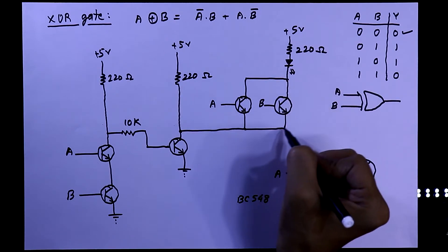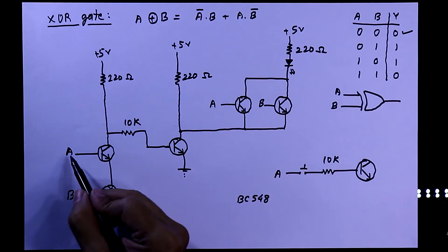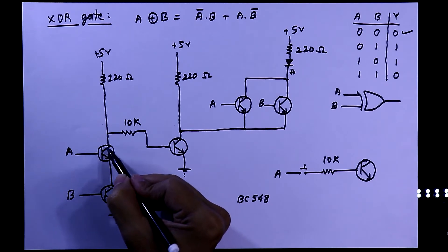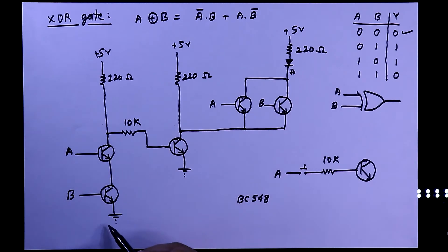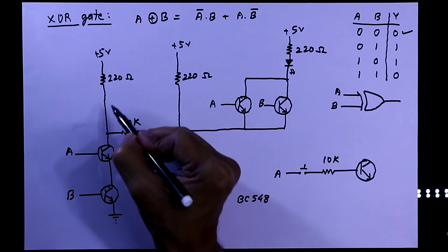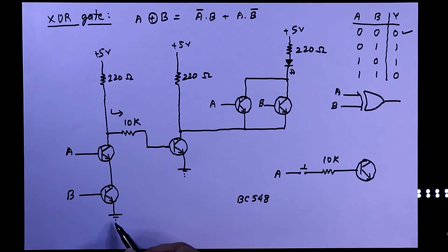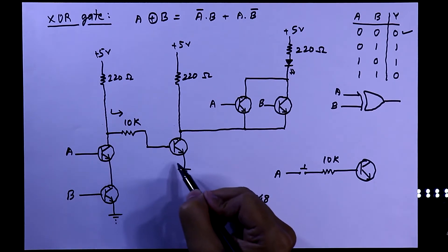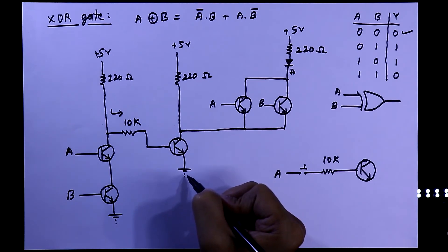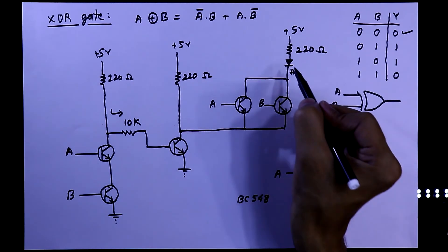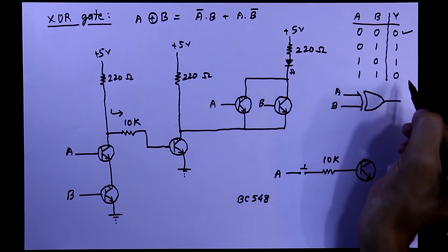When both inputs are activated, both transistors in the AND gate combination are working as closed circuits. This point is now connected to ground directly, so there is no chance for current to flow through the other path. As a result, the middle transistor works as an open circuit, this point is disconnected from ground, the LED is disconnected from ground, and we get output low.